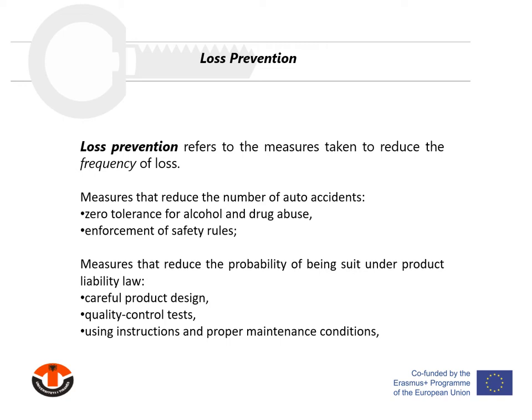Loss prevention refers to the measures taken to reduce the frequency of loss. Numerous activities reduce expected loss by reducing the frequency of losses. For example, measures that reduce the number of auto accidents include zero tolerance for alcohol and drug abuse, enforcement of safety rules, construction of appropriate barriers, and lighting and road signs on highways.